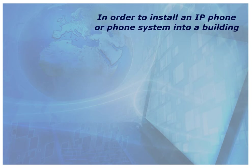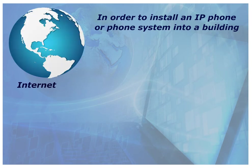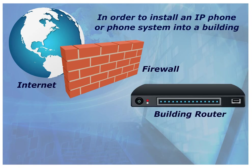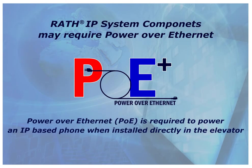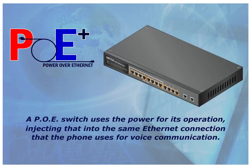In order to install an IP phone or phone system into a building, you need an IP network with internet and a firewall, a building router, and a network switch. The building's network must also be on a backed-up power source. POE, which stands for Power Over Ethernet, is required to power an IP-based phone when installed directly in the elevator. A POE switch uses the power for its operation, injecting that into the same Ethernet connection that the phone uses for voice communication.